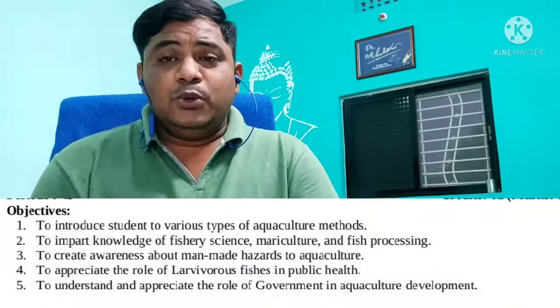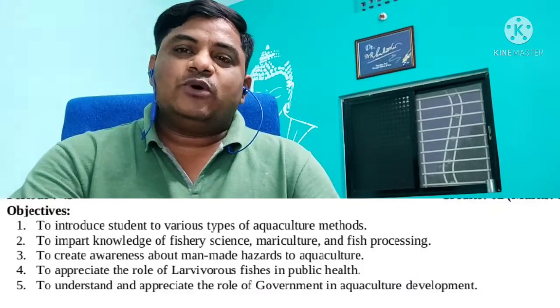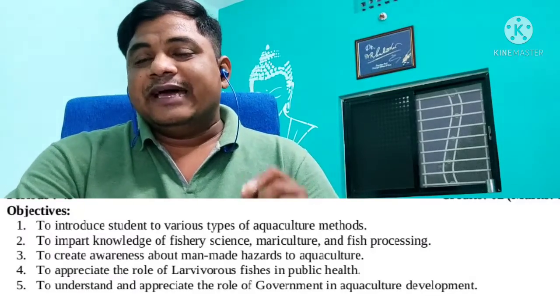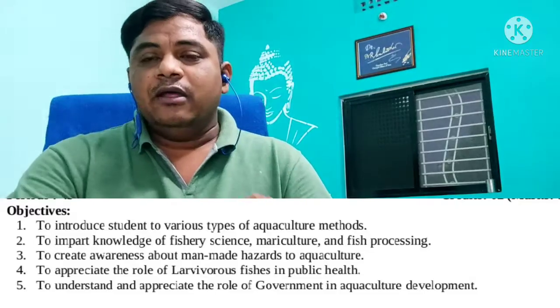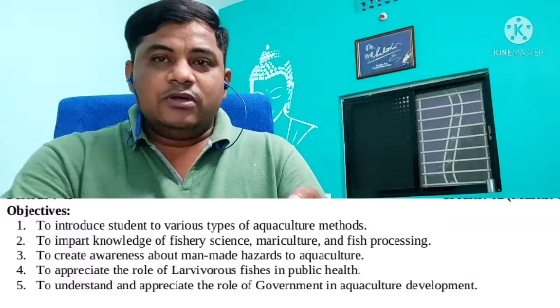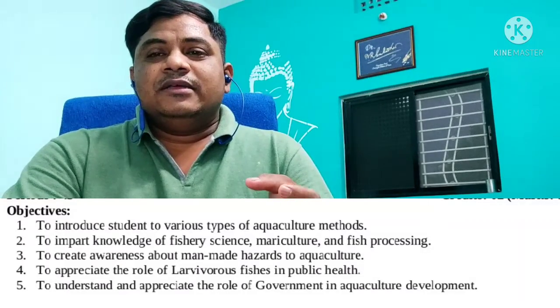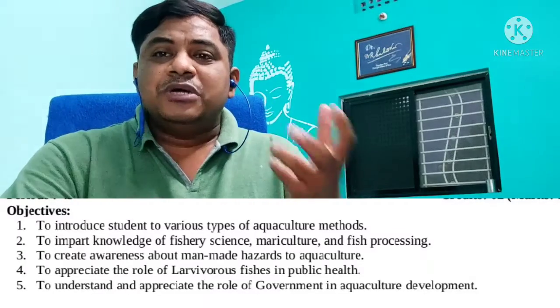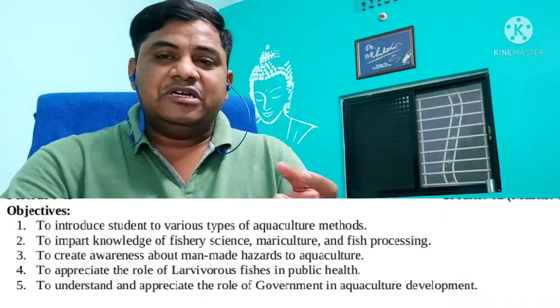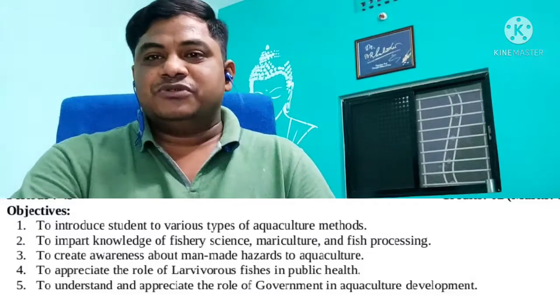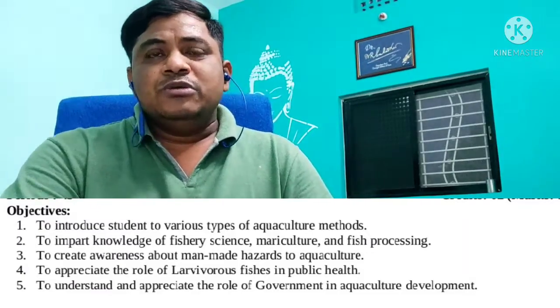We are starting this lecture with an introduction to the syllabus of this paper — what is the syllabus and what type of units we have to discuss in this particular paper. Before we discuss the syllabus, we should know the objectives of this paper: why this paper is included in the third year B.Sc. zoology and how it is important to the students. The main objective is to introduce students to various types of aquaculture methods.